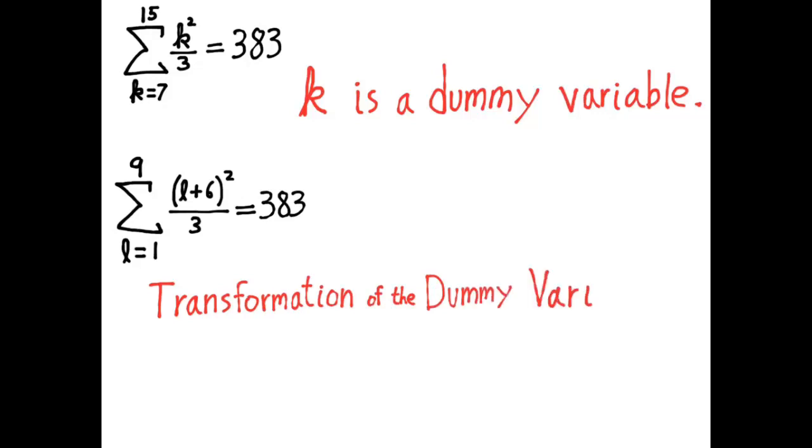Why? Because it's the same exact sum. All we did was transform the dummy variable. If you put l equals 1 to get the first term, you'd have 7 squared over 3. Just like the first term of this sum is 7 squared over 3. Every term is the same. We just did the transformation l equals k minus 6.